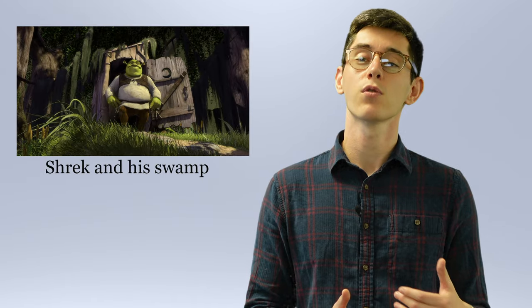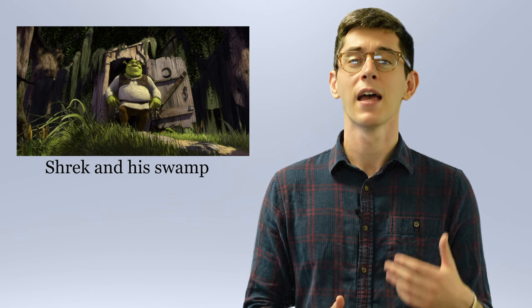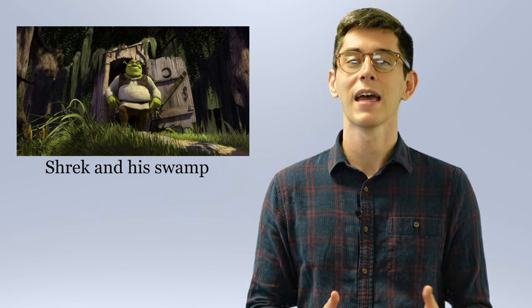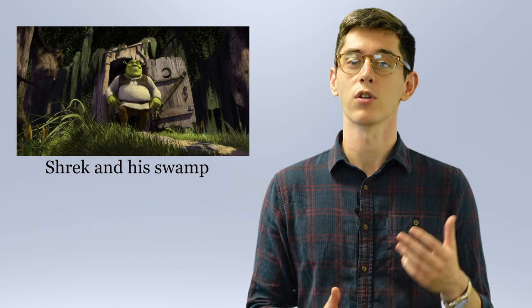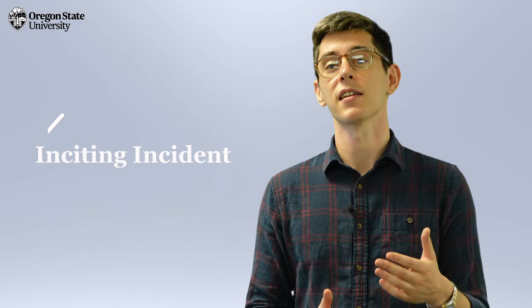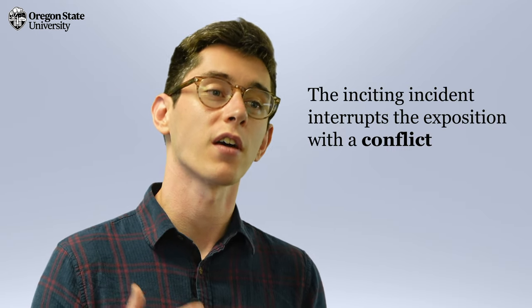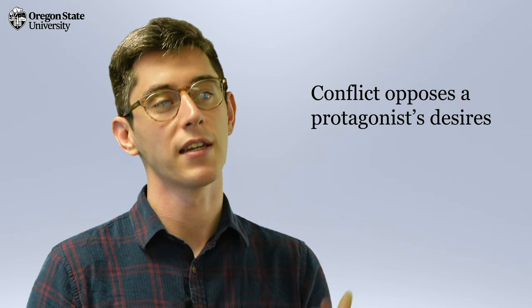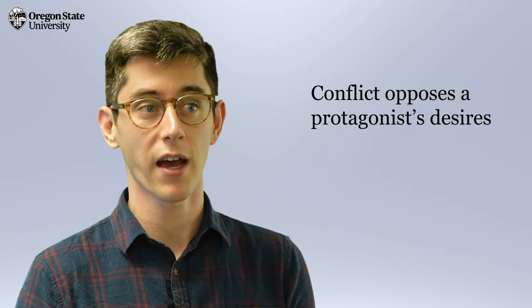The exposition of the movie introduces us to Shrek, our main character, an ogre who is hated by the townsfolk and lives on his own in the swamp, where he enjoys being alone. The slope of the pyramid begins with an inciting incident that sets up the rising action of the arc. The inciting incident is something that interrupts the exposition with the conflict, something that thwarts, endangers, or opposes a protagonist's desires.